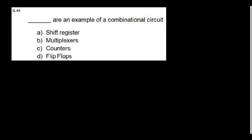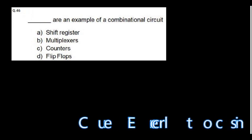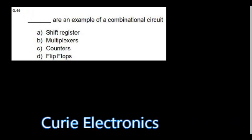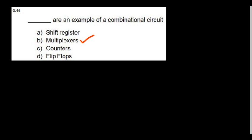Which of the following is an example of a combinational circuit? Counters, flip-flops, and shift registers are all based on flip-flops, so they are sequential circuits. Multiplexers are the combinational circuit.